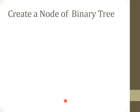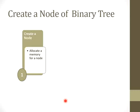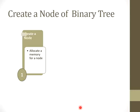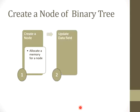Now, what are the steps we need to follow for the creation of a node in a binary tree? Step one is to create a node, which means allocating a memory space for that node. After the memory is allocated, step two is to update the data field — that is, assign the information to the data field of that node. Here you can see the information part is updated, now holding the character type data A.